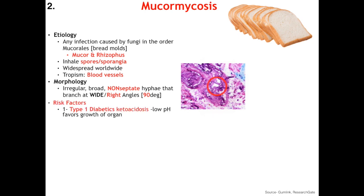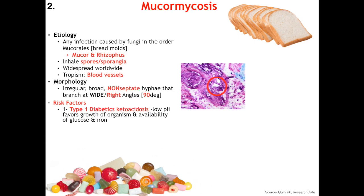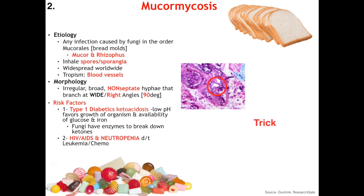The risk factors: first, type 1 diabetics in ketoacidosis — the low pH and high glucose levels provide the perfect environment for Mucor to take over. The second is always HIV/AIDS and neutropenia. The trick to remember this is the clock at 3 o'clock: type 1 diabetics in DKA are at most risk, followed by HIV/AIDS patients or neutropenics. And at 3 o'clock the clock hands are at a right angle — to remember the morphology as wide right-angle branching.